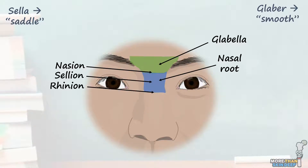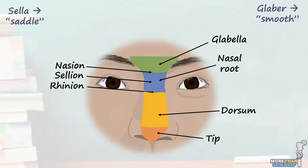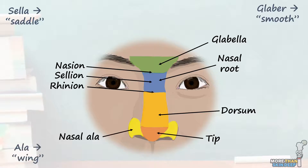Now continue to move your finger inferiorly, and we'll come to the next part of the nose. This large portion that goes from the rhinion to the tip is known as the nasal dorsum, or sometimes nasal ridge. Directly inferior to this is the fleshy nasal tip, which is usually the part of the nose projecting furthest out from the plane of the face. If we move our finger laterally from the tip, we'll come to two soft tissue walls that enclose the nares, or nostrils. These are known as the nasal ala, whose name comes from the Latin word for wing.